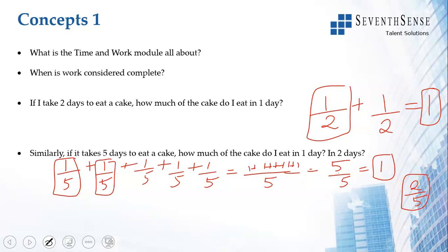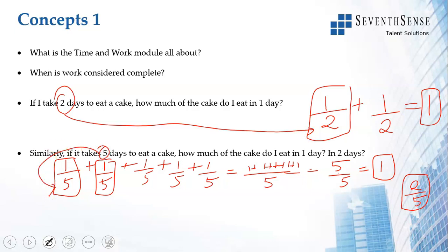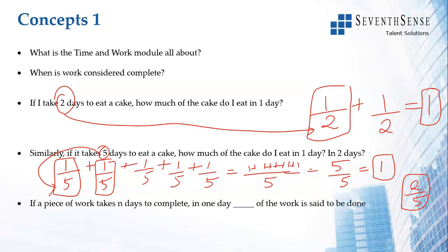So can you see a pattern here? If I take two days to eat a cake, on each day I am doing 1/2. If I take five days to eat a cake, on each day I am doing 1/5 of the cake. So the most important concept: if a piece of work takes n days to complete, in one day 1/n of the work is done. In the second day also 1/n of the work is done. In two days, 1/n plus 1/n gives 2/n of the work is done.